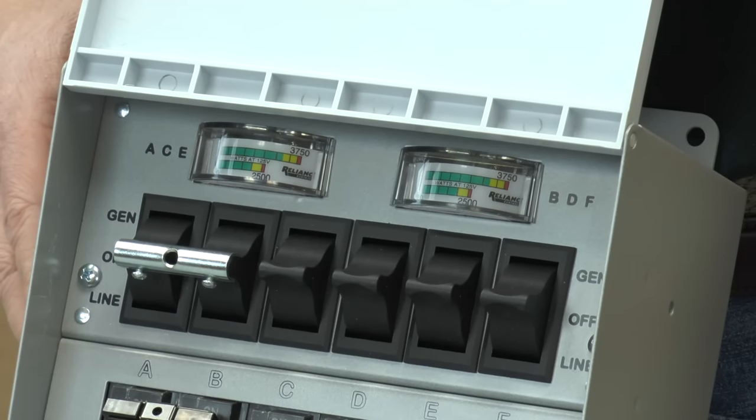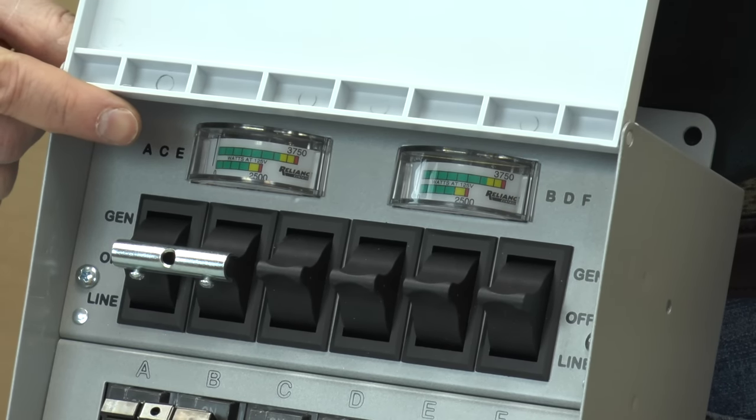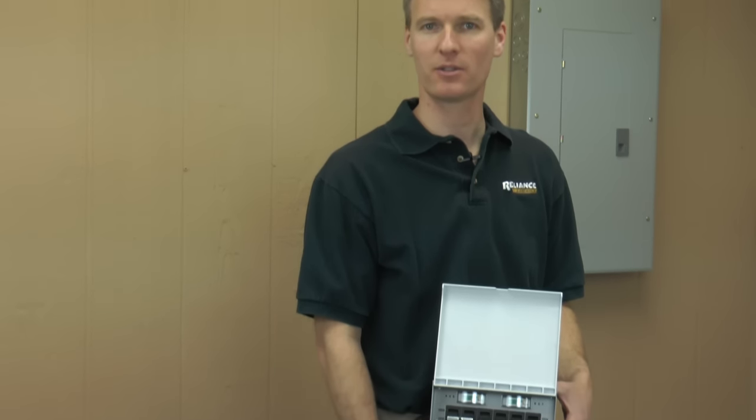When the generator is in use, these meters will show how much power is being used on each side of the transfer switch. Your generator will operate most efficiently if you can divide the power used evenly between the two sides of the transfer switch.